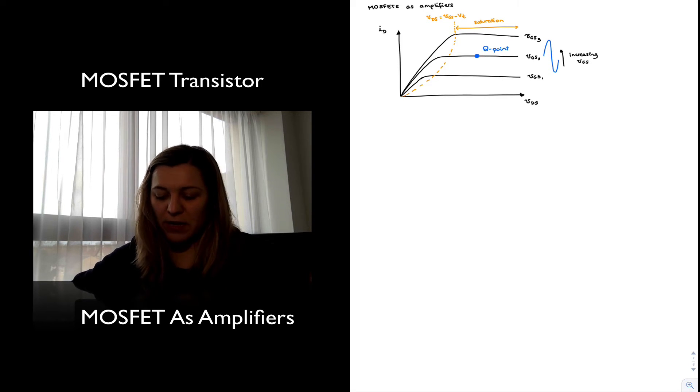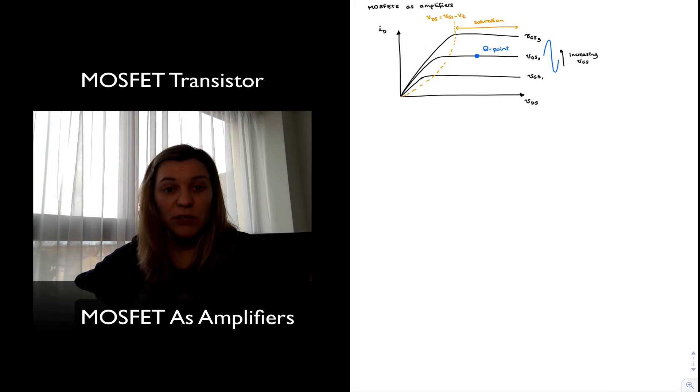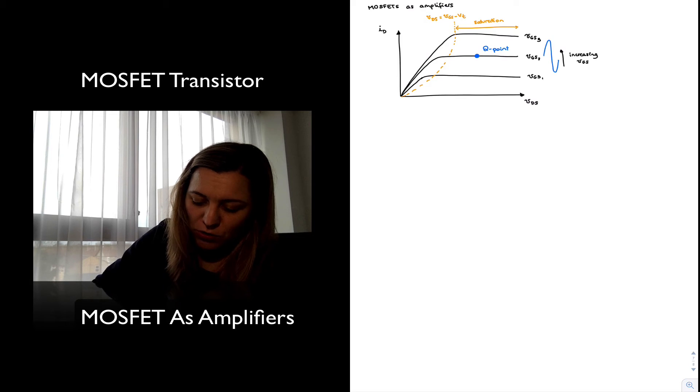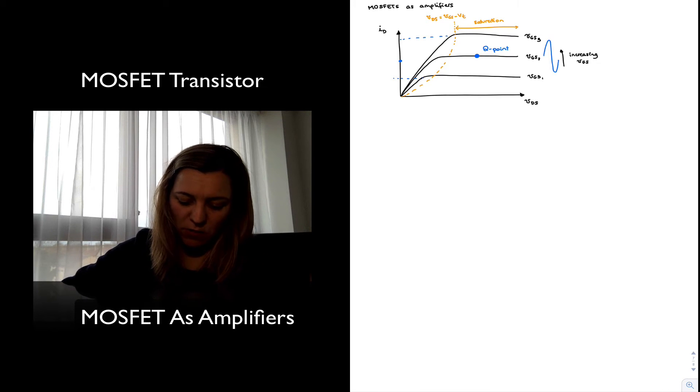And so if I apply a small AC signal to my gate of my transistor, in essence, what I'm doing is I'm moving VGS, right? I'm varying VGS around that Q point. And what that's going to result on is a variation of ID around that Q point as well. So as my VGS goes up and down, my ID is going to go up and down.